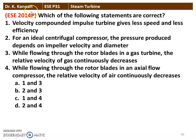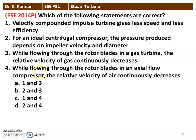The next question from the 2014 question paper — which of the following statements are correct? Velocity compounded impulse turbine gives less speed and less efficiency. For an ideal centrifugal compressor, the pressure produced depends on the impeller velocity and the diameter. While flowing through the rotor blade in a gas turbine, relative velocity of the gas continuously decreases. While flowing through the rotor blade in an axial flow compressor, relative velocity of the air continuously decreases.